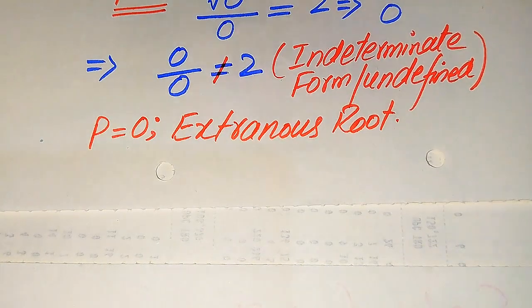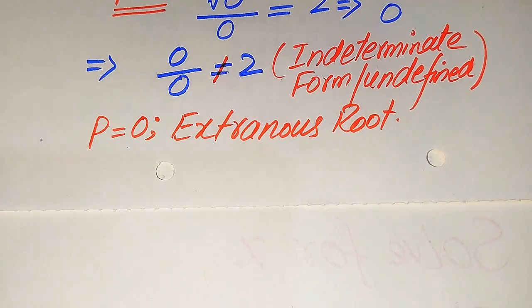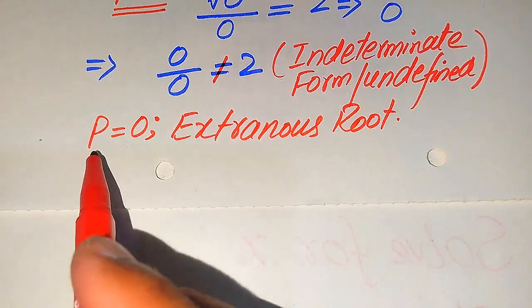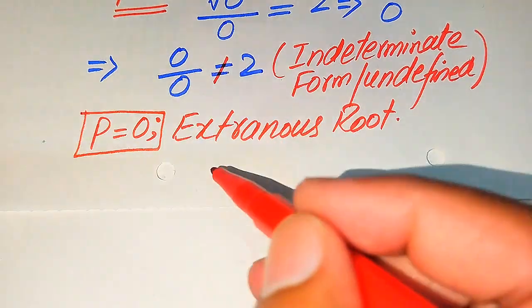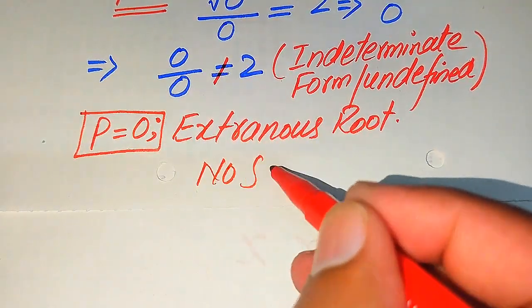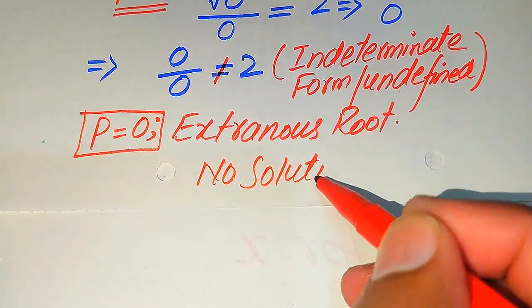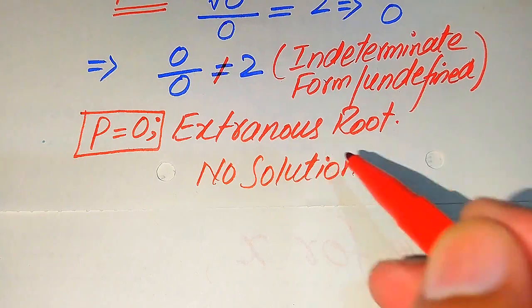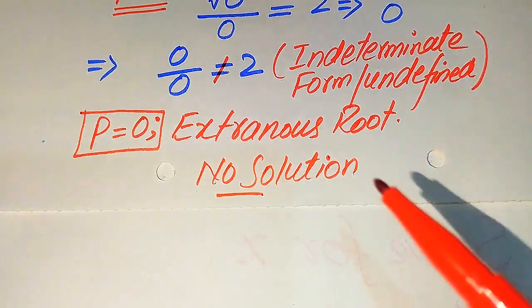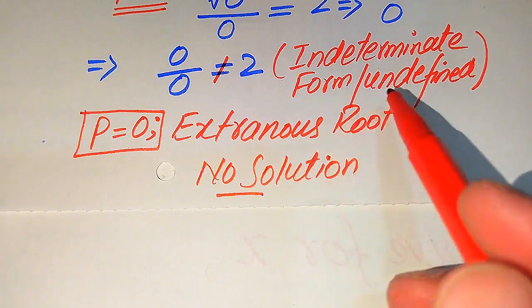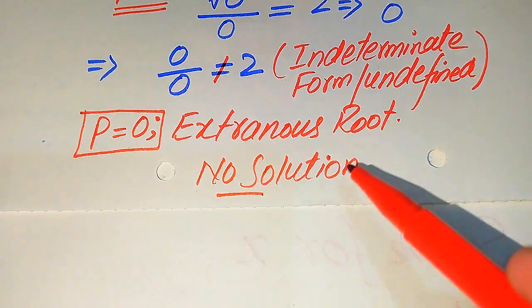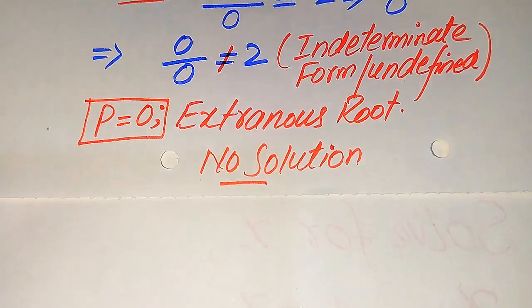Since p = 0 is not satisfied by our given equation, it is the extraneous root. We conclude that the solution set of this question is empty — this question has no solution, because p = 0 is the only value we obtained and it cannot satisfy the given equation.